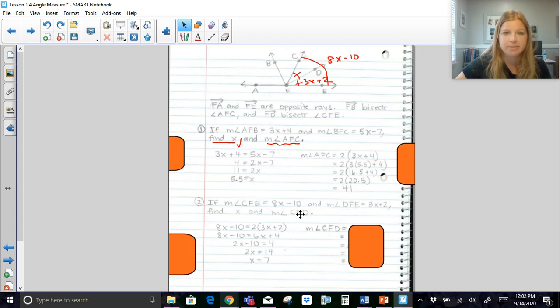Now to find the measure of CFD, the second part of this, what we have to remember is if this is 3X plus 2, then this is also 3X plus 2. Since those angles are equal to each other, I can go ahead, substitute in my X for just 3X plus 2, and I end up getting 23.